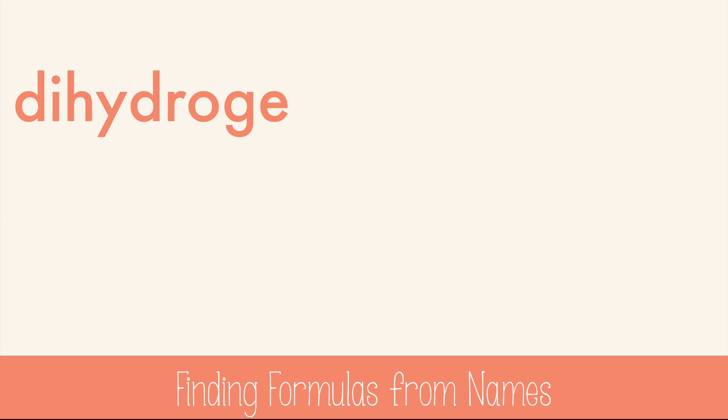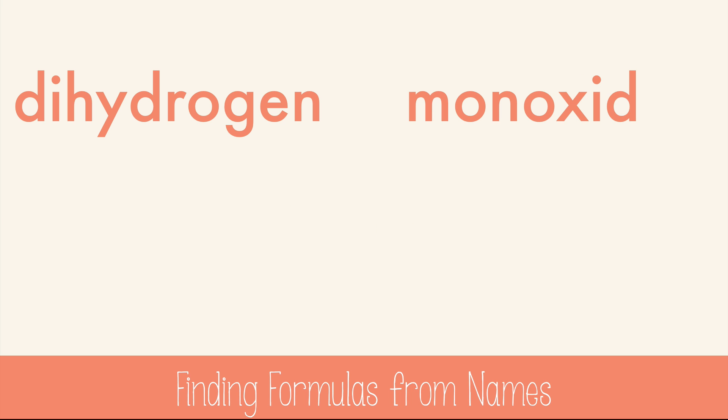Let's try another one: dihydrogen monoxide. Di means two, mono is one, so this is H2O. Oh wait — you know that one. It's water. It's actually perfectly acceptable to call this water instead of dihydrogen monoxide. A few other chemicals are referred to by their common names more than their binary molecular formulas, like methane and ammonia.